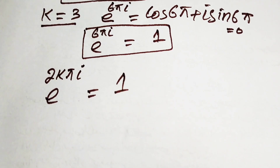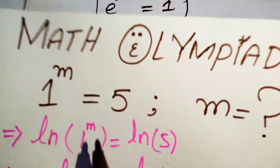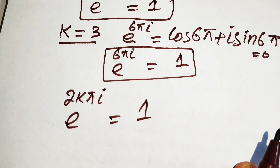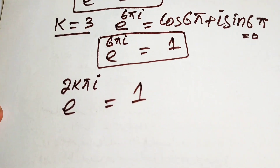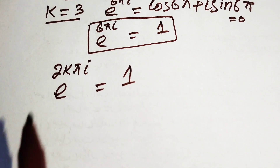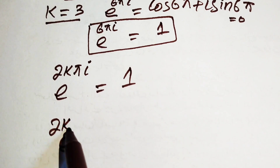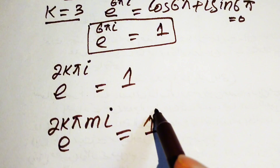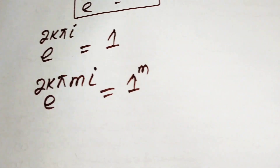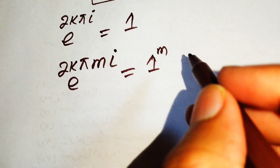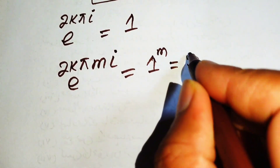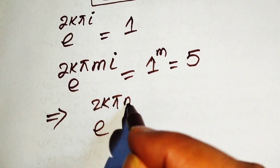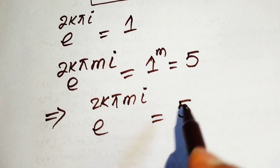Our question states 1 to the power of m equals 5. We take the Mth power on both sides of the Euler identity e^(2kπi) = 1, giving e to the power of 2k pi M iota equals 1 to the power of M. Since 1^m equals 5, this implies e to the power of 2k pi M iota equals 5.